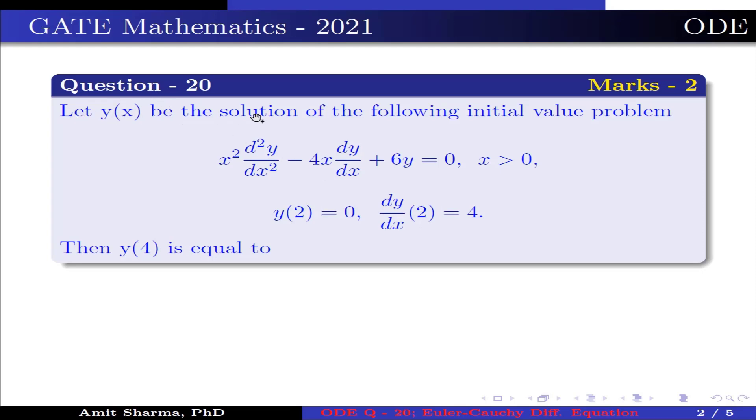Question is: let y(x) be the solution of the following initial value problem: x² d²y/dx² - 4x dy/dx + 6y = 0, where x > 0, y(2) = 0 and dy/dx at 2 is 4. Then y(4) is equal to...